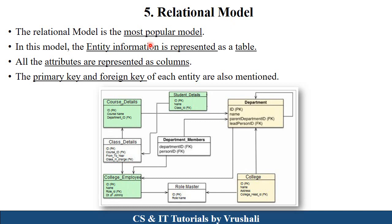The last model is the relational model. Among all other models, the most popular is the relational model, which is mostly used in real life. Here all entity information is represented in tabular format and all attributes are represented in column format. Each and every table is present in the database — like department table, college table, role master, college employee, class details, course details, student details. Department has its ID and name, student details also have ID, name, and their relationships between each table. Every detail including primary key and foreign key is stored here, representing how many tables are in the database and the relationships between all these tables.